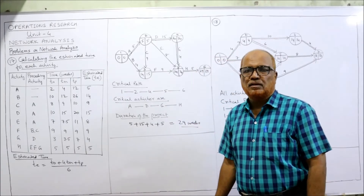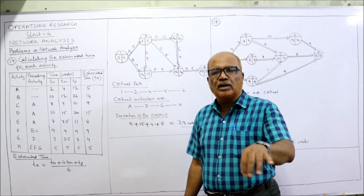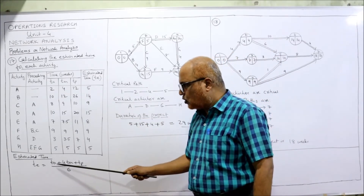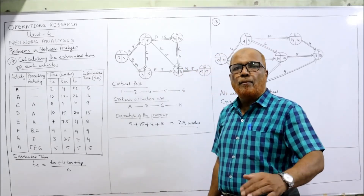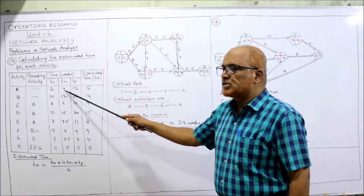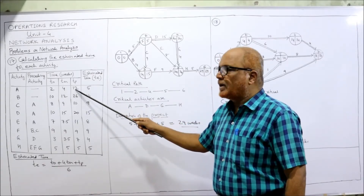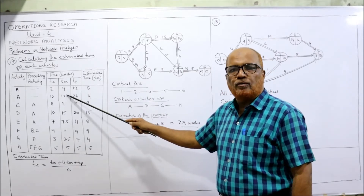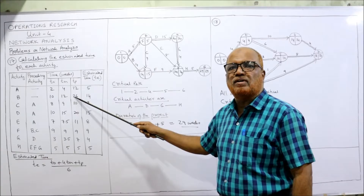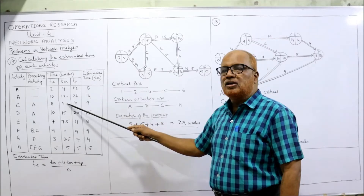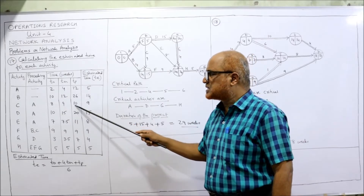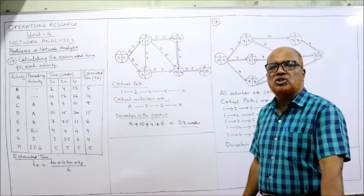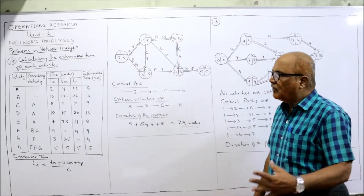We don't require variance since no probability is asked. The formula for estimated time is te = (to + 4tm + tp) / 6. Multiplying tm by 4: for example, 16 + 2 + 12 divided by 6 gives 5; 48 + 10 + 26 divided by 6 gives 14; 36 + 8 + 10 divided by 6 gives 9. Calculate all estimated times for each activity this way.